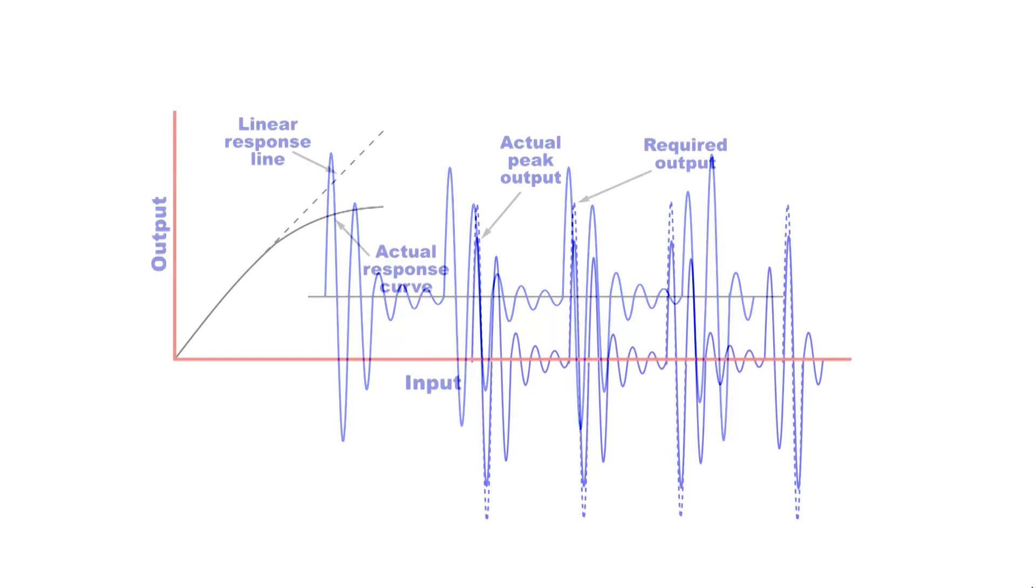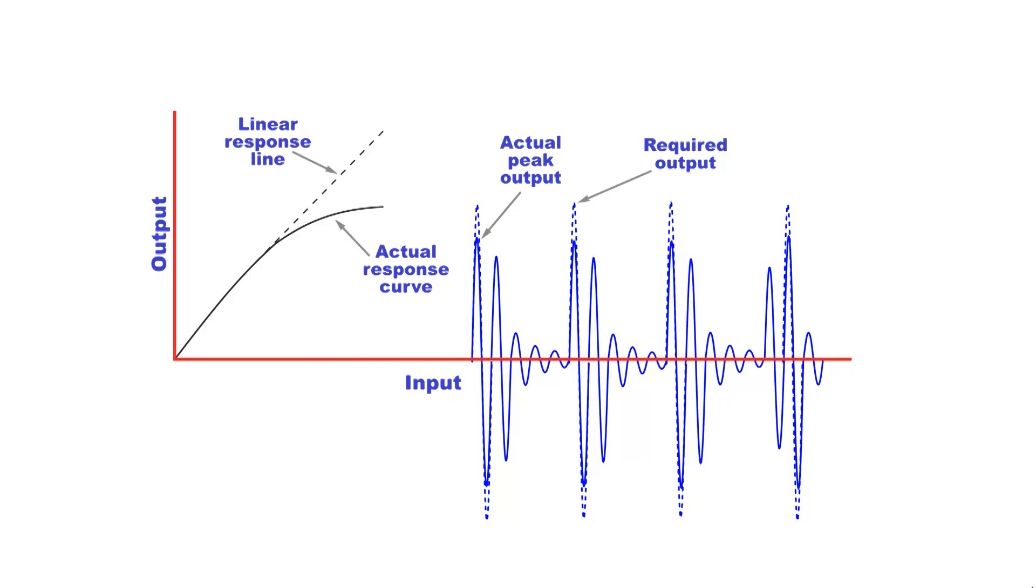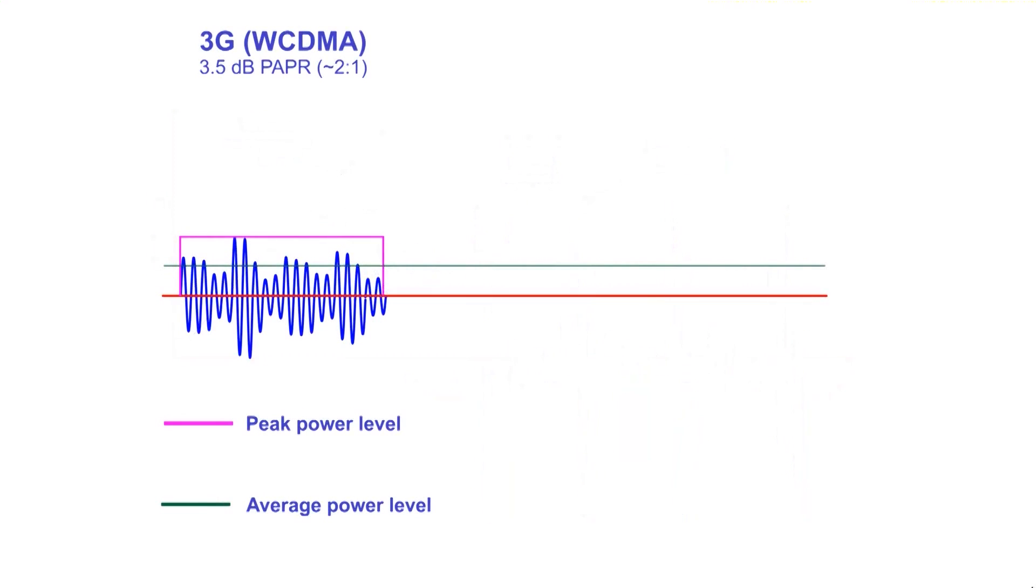These waveforms have an amplitude element to the modulation and this needs to be preserved. To achieve this, the amplifier must be able to accommodate the peaks without distortion. In turn, this means the signal must be within the linear region of the amplifier and this reduces the average power level the amplifier can accommodate. In fact, the peak to average power level is key to the efficiency levels that can be achieved.